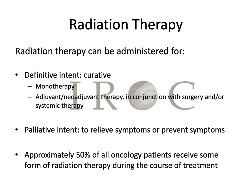Palliative radiation is also done very commonly and it's used to relieve symptoms or prevent symptoms prior to them happening. Examples here would be radiation to bone metastases to help with pain or radiation to the whole brain to prevent neurologic decline. Approximately 50% of all oncology patients receive some form of radiation therapy during the course of treatment, so we really play an integral role in the cancer center.